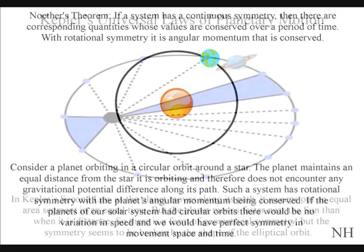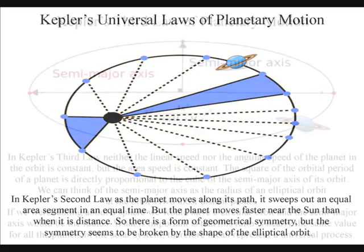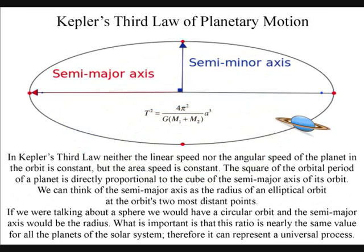The elliptical orbits of our solar system are perfect examples of when this symmetry is broken, with planetary speed and angular momentum that varies relative to the distance from the sun. As the planet moves along its path, it sweeps out an equal area segment in an equal time. So the symmetry is based on geometry — there is a form of geometrical symmetry, but the symmetry is broken by the shape of the elliptical orbit.